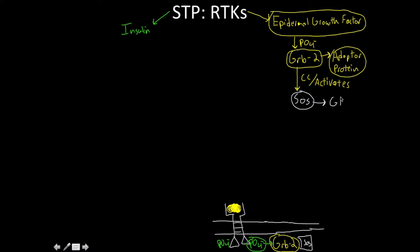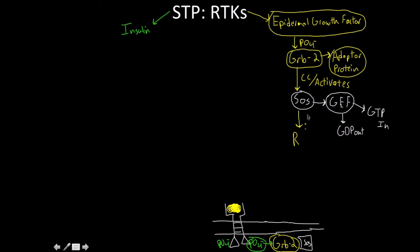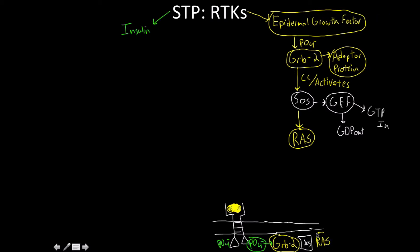SOS has a unique feature — it's called a GEF, which stands for Guanosine Nucleotide Exchange Factor. This means we take GDP out of something and put GTP in. Through its GEF activity, SOS activates something known as RAS. RAS is analogous to the G-protein alpha subunit: in its inactive form it is bound to GDP, and SOS causes a conformational change resulting in RAS bound to GTP instead.